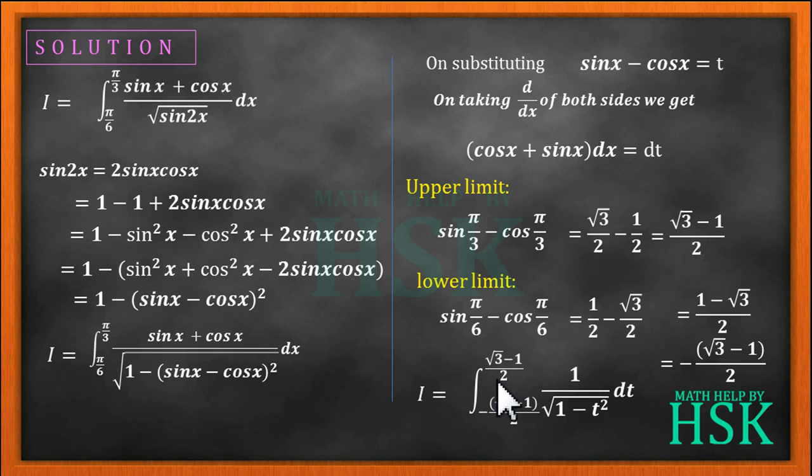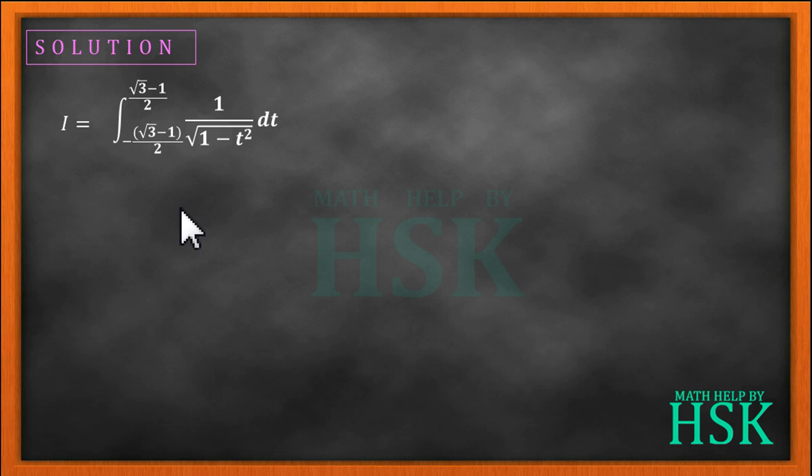Now if we assume that f of t equal to 1 by square root of 1 minus t square, then f of minus t is equal to 1 by square root of 1 minus minus t whole square.